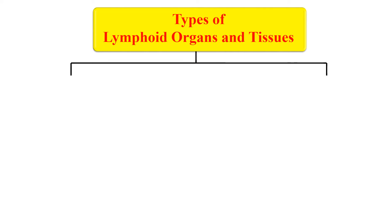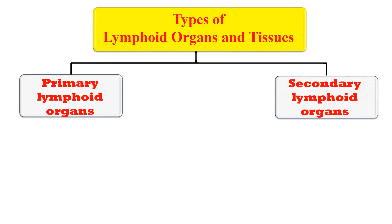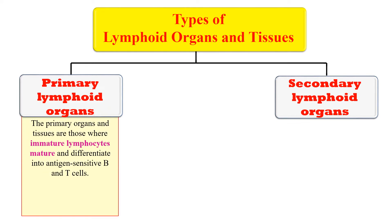Generally, the lymphoid organs are divided into two categories. First is the primary lymphoid organs and second is the secondary lymphoid organs. The primary lymphoid organs are those organs where the immature lymphocytes mature — meaning the organs in which maturation of the lymphocytes takes place. Examples of the primary lymphoid organs are thymus and bone marrow.